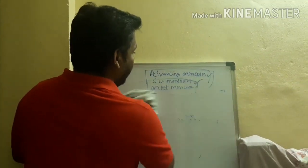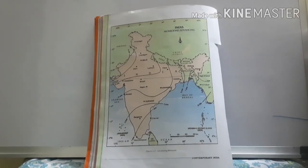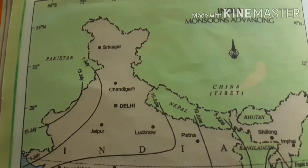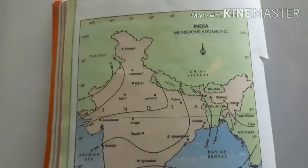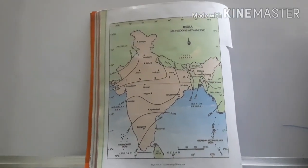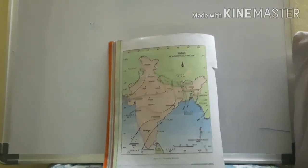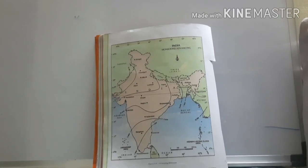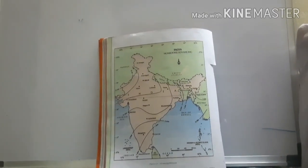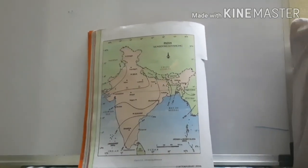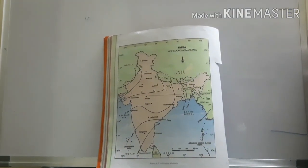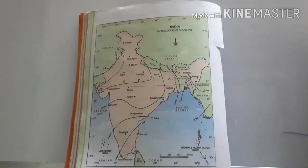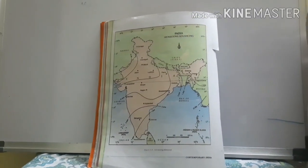Looking at the advancing monsoon map, the southwest monsoon first reaches Kerala on June 1st, and the Shillong plateau area in the northeast. By June 5th it reaches Karnataka and Andhra Pradesh; by June 10th, Maharashtra, Telangana, and Odisha; then Bihar. By July 1st it reaches Gujarat and Rajasthan. By July 15th it covers Rajasthan fully. Bangladesh is reached around May 25th, along with the Andaman and Nicobar Islands.